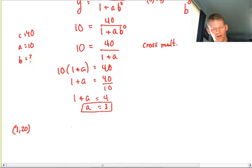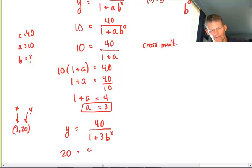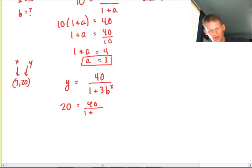So I'm going to write y equals, remember the c value is 40. That 1 plus, this is now 3, to the bx. So the last thing I have to do is plug in this condition to solve for that other missing constant. So this is going to be 20 for y, because that's what the y coordinate is. I'm going to have 40 over 1 plus 3 times b to the 3rd power.